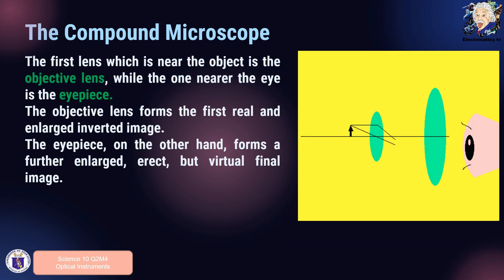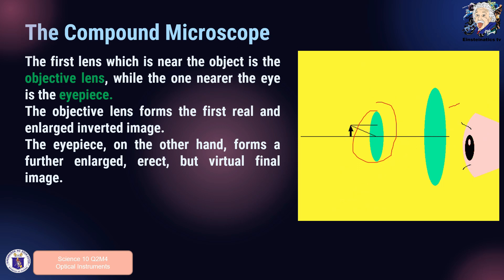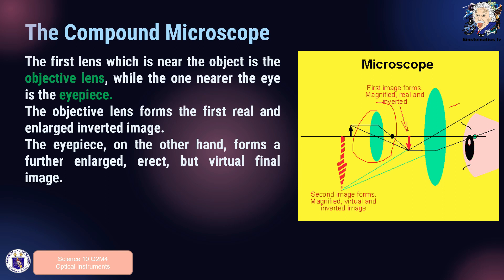How does a compound microscope magnify an object? The first lens near the object is the objective lens, while the one near the eye is known as the eyepiece. The objective lens forms a real, enlarged, inverted image first. The eyepiece, on the other hand, forms a further enlarged, erect, but virtual final image. So it is a combination of the objective and the eyepiece.